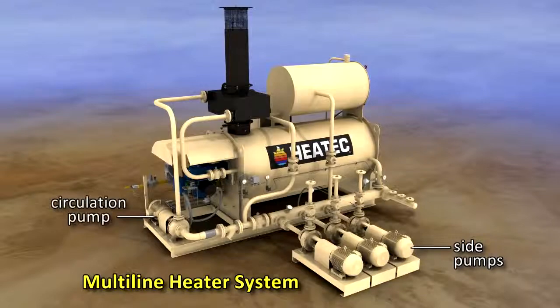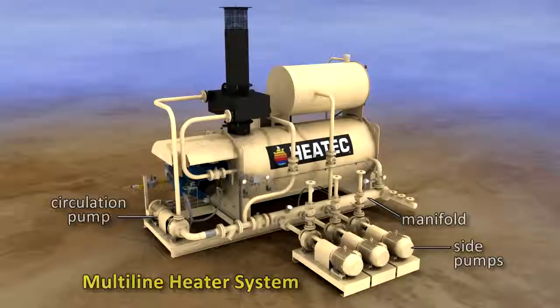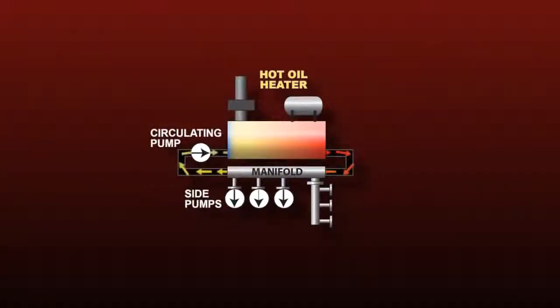The multi-line heater has a circulation pump and manifold. The circulation pump serves solely to recirculate the oil through the heater coil.